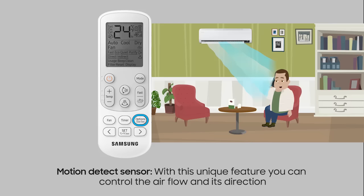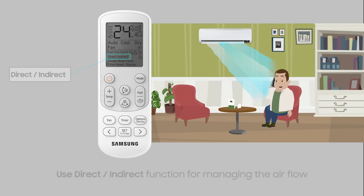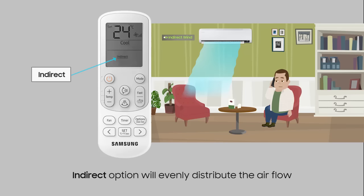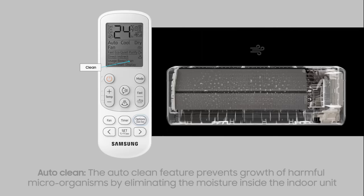Motion detect sensor: with this unique feature, you can control the air flow and its direction. Use the direct or indirect function for managing the air flow. Use the direct option to get the air flow directed at you, while the indirect option will evenly distribute the air flow.